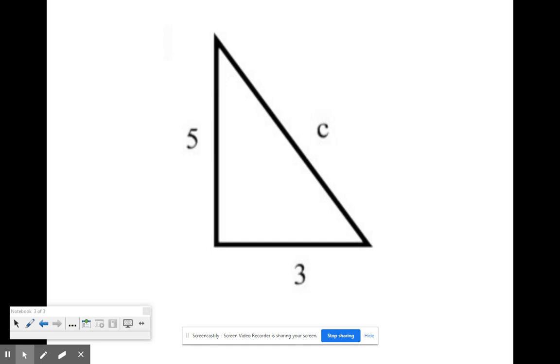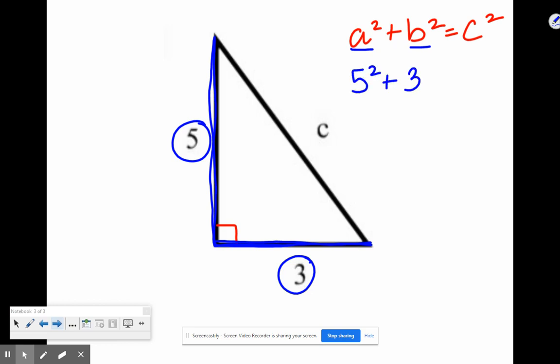All right, example number one. We're going to assume all of these we're working with have a right angle right here, and they want us to solve for side C. Since this is a right triangle, we can use A squared plus B squared equals C squared. I always rewrite it at the top of my paper or on each problem so that I'm not having to look back on my notes every single time. First things first, the legs of the triangle would go in for A and B. Remember, the legs of the triangle are the two sides that make up that right angle, so that would be five and three. So I'm going to put five in for A and three in for B.